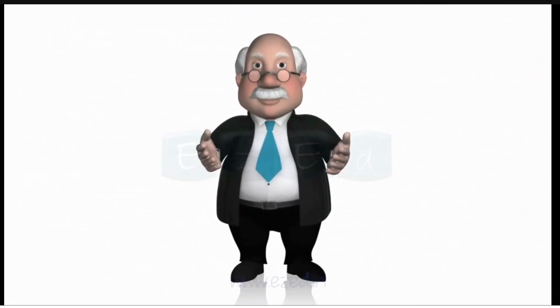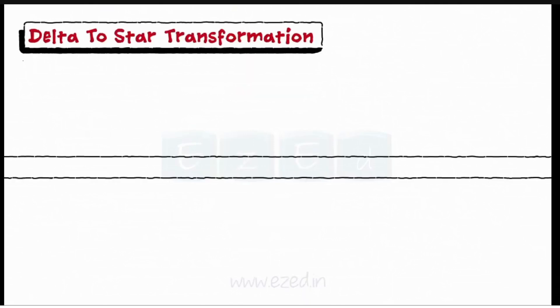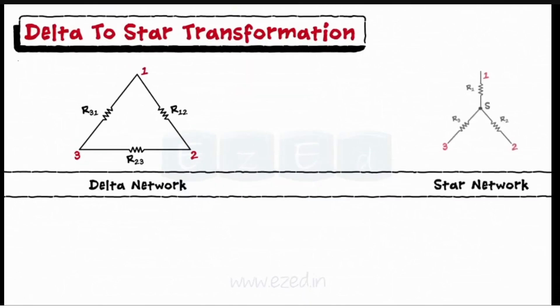It's time to concentrate now. Consider the delta and star networks as shown. The resistances connected in the star are calculated as R1 equals R12 into R31 upon R12 plus R23 plus R31.